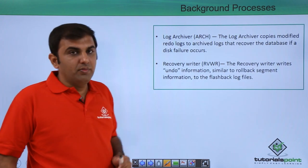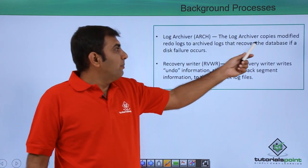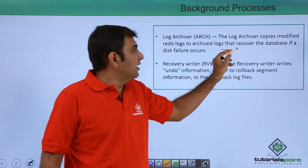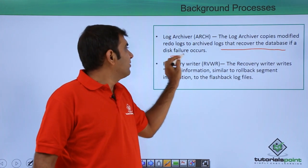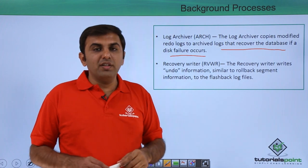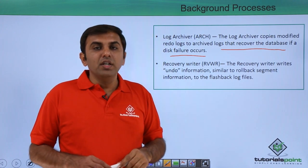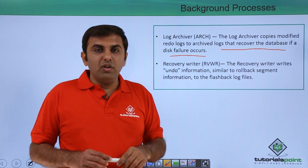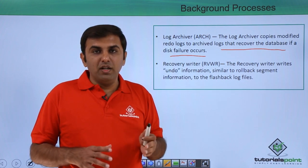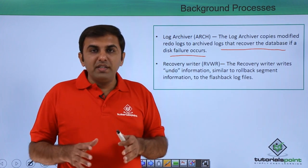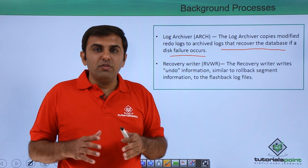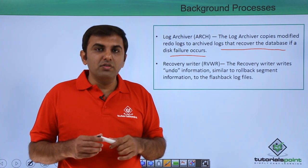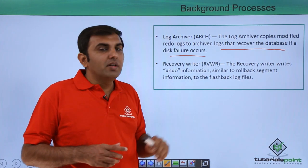Next, the log archive process (ARCn). The log archiver copies modified redo logs to archive logs, which can be used to recover the database if a disk failure occurs. For this, your database must be in archive log mode. Whatever redo log file copies are generated into archive logs allow point-in-time recovery in case of database failure.